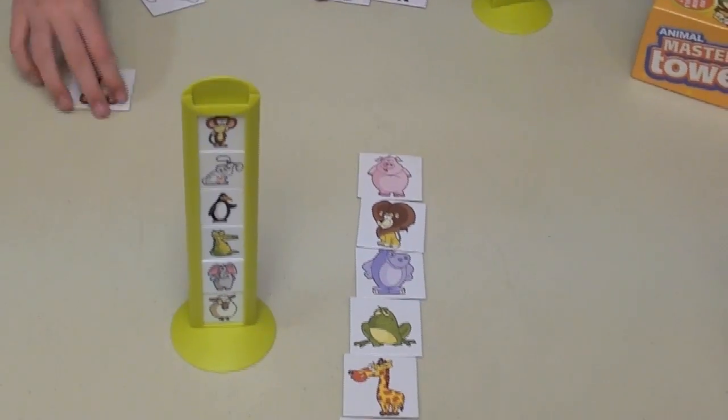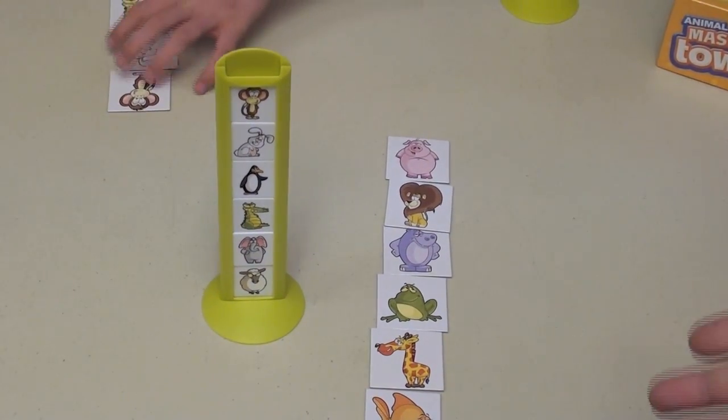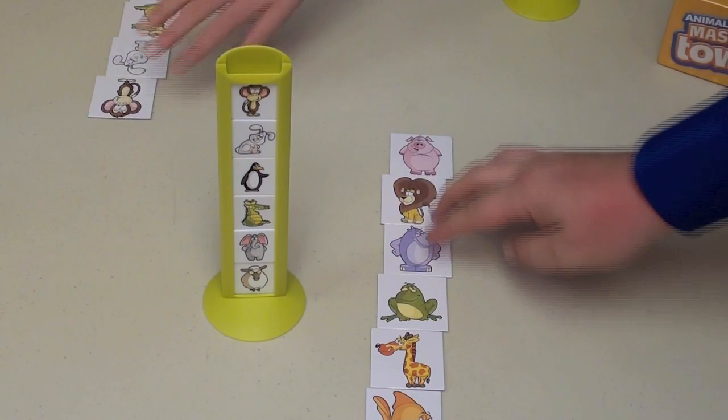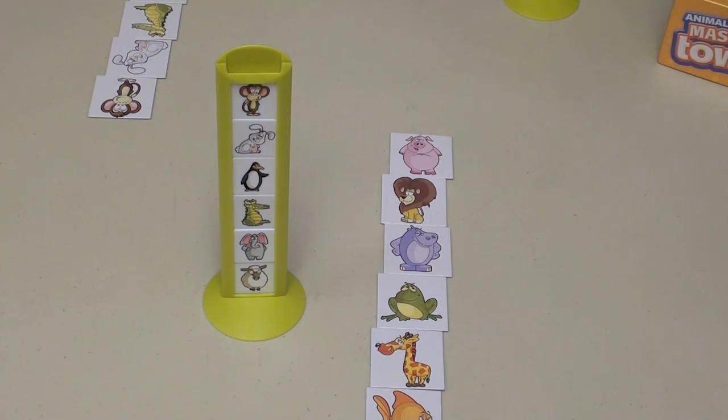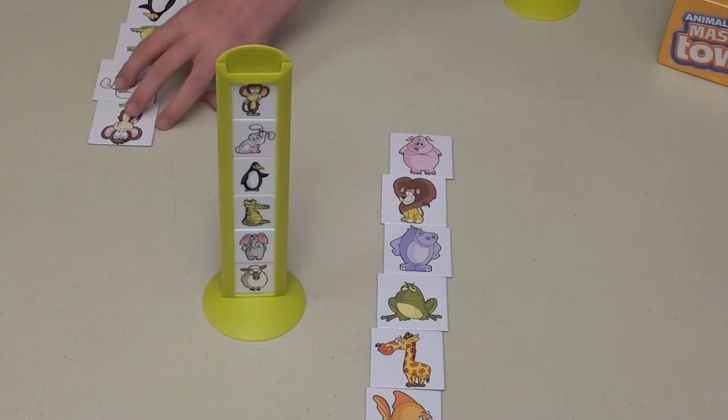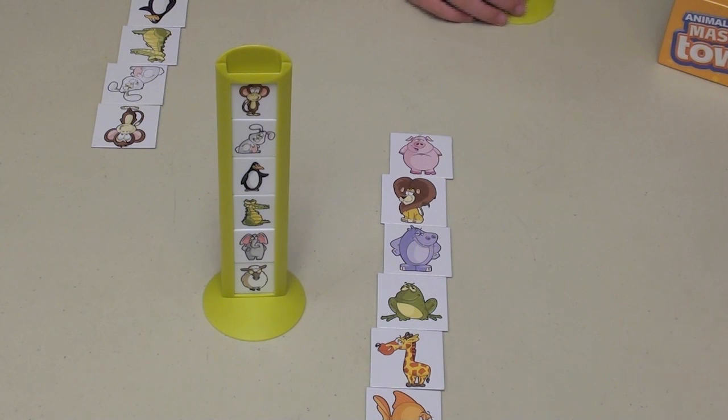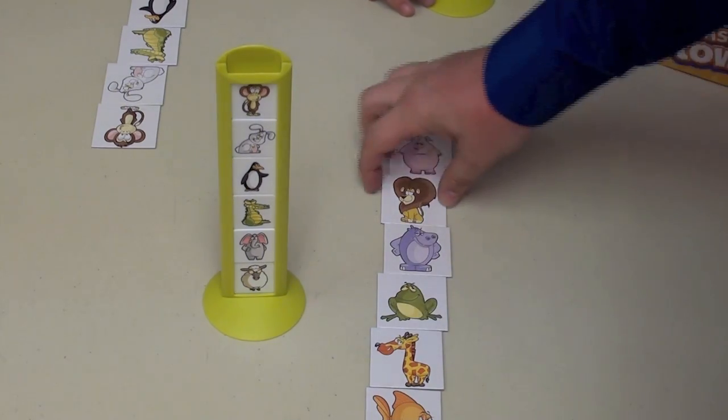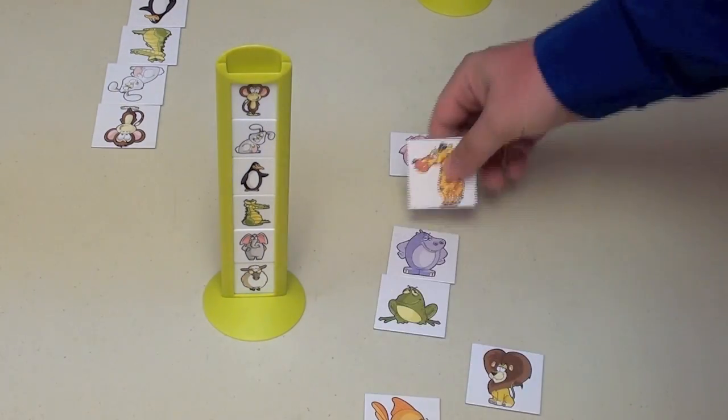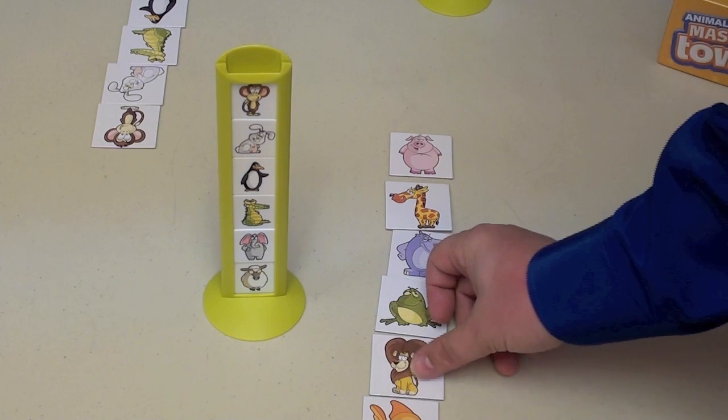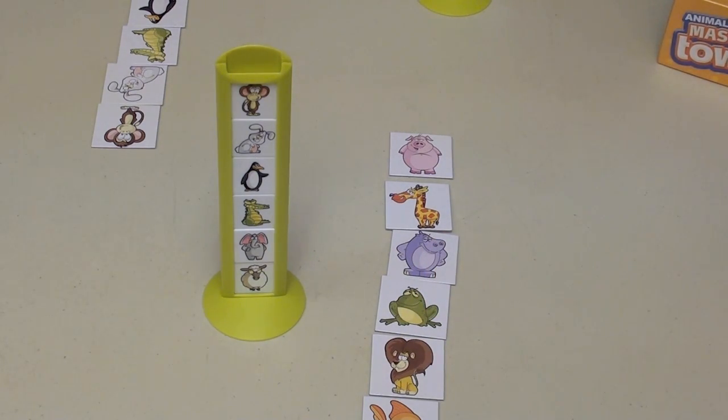And then on my turn, I will ask Melody a question here. So let's say, for example, I say, alright Melody, is your lion over the giraffe? No. She says no. So now I can rearrange these to show that the lion is not over the giraffe. Now, if she had said yes to my question, then I could go again. But I didn't, so she asks me a question.